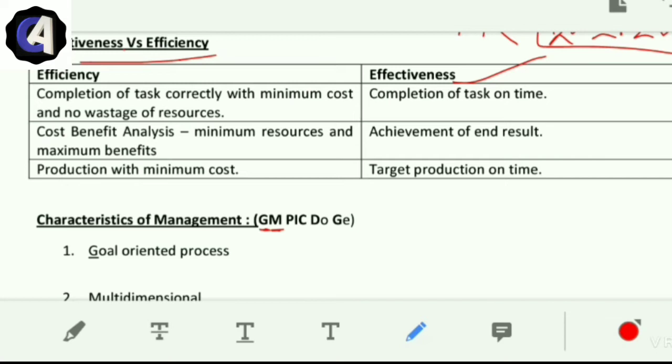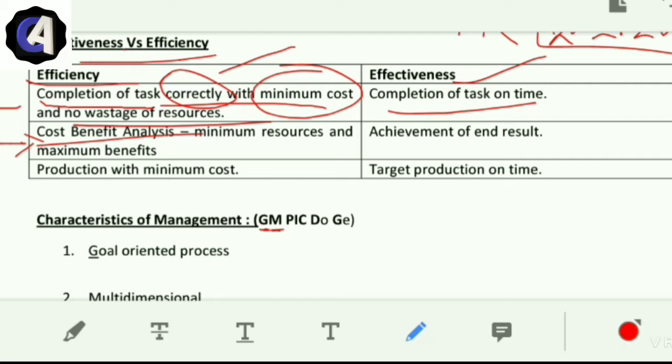Now we'll see the difference between effectiveness and efficiency. Effectiveness means completion of task on time. If you complete work on time, you are effective. You're not concerned about resource usage or costs, just the end result. Efficiency means completion of tasks correctly with minimum costs, no wastage of resources. We do cost-benefit analysis. Effectiveness is achievement of end result; efficiency is production with minimum costs and target production on time.